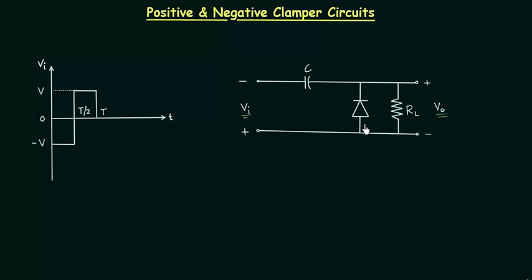I will analyze this circuit for the first half cycle from 0 to T/2. The input voltage Vi is equal to minus V for the first half cycle. So the polarity is minus-plus — this terminal is negative and this terminal is positive. The direction of current is anticlockwise, which is similar to the direction of the arrow in the diode symbol. So this diode is forward biased, and I will replace it with a short circuit because I am considering the ideal diode.